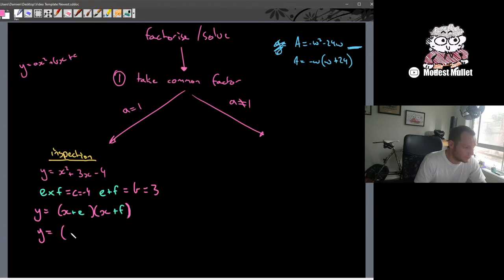So in our case, what's our magic numbers? Well negative 4 and adds to give me 3. So that'll be plus 4 and negative 1. Plus 4 times negative 1 is negative 4. Plus 4 add negative 1 is 3. So that works. That's inspection.